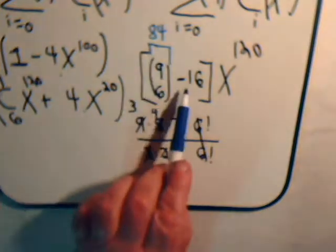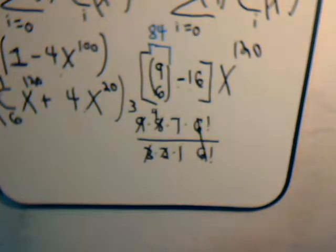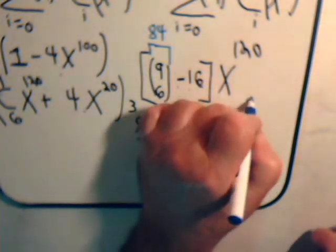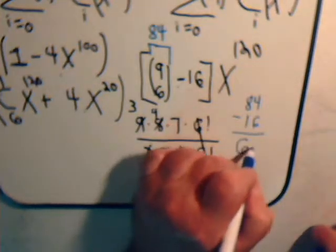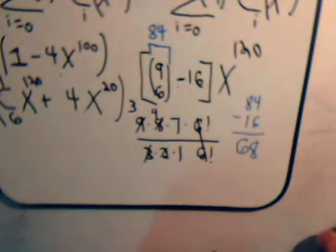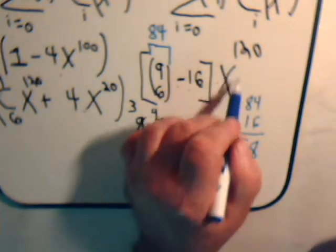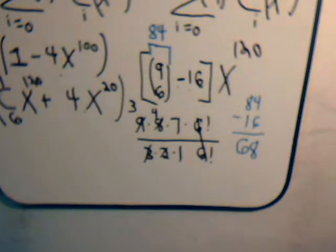84 minus 16, I think that's 68. Yes. Okay. So 68 is the coefficient of x to the 120. So that then is the solution to our problem.